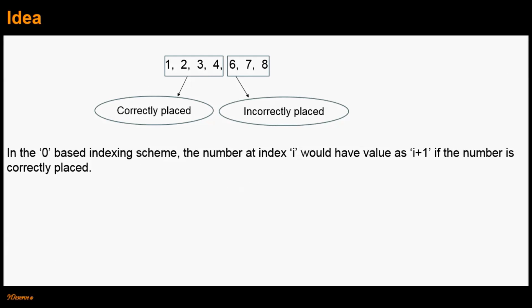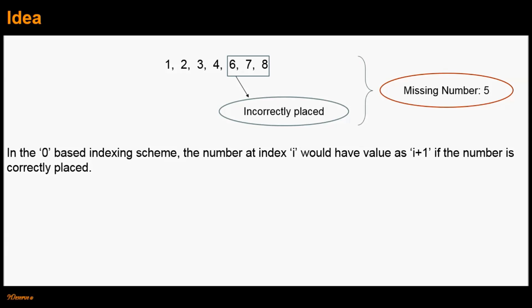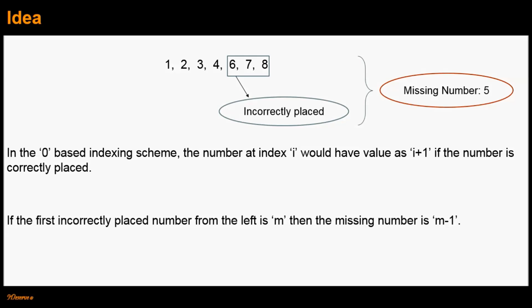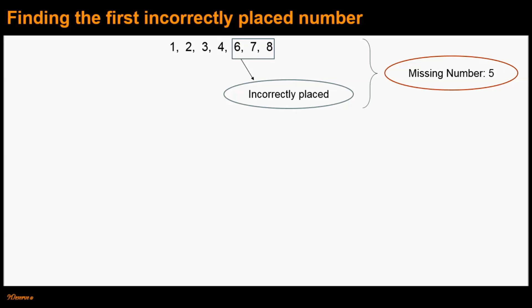Having defined correctly placed numbers, let's now look at the idea used by the algorithm. Notice that the first incorrectly placed number from the left is number 6, and the missing number in this case is number 5. More generally, if the first incorrectly placed number from the left is m, then the missing number is m-1. Here m is 6, and therefore the missing number is 5.